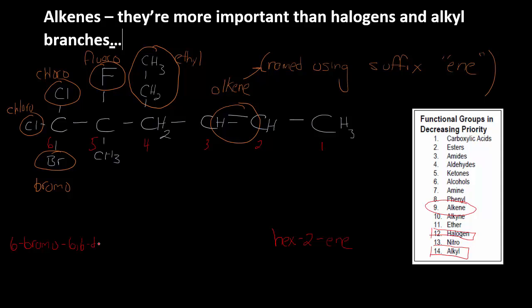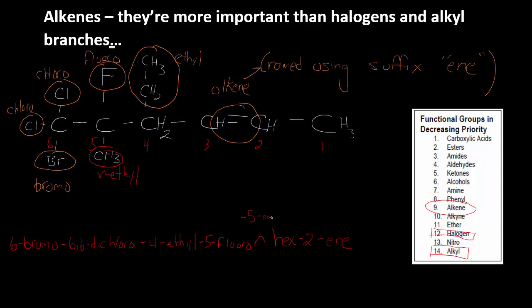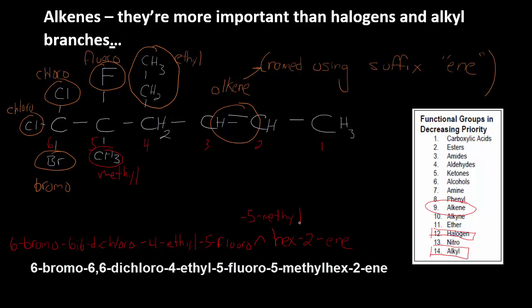Label all your branches: 6-bromo, 6,6-dichloro. And there's the methyl group I forgot about. Then we have 4-ethyl, 5-fluoro, and 5-methyl — to get the alphabetical order right. So the full name is 6-bromo-6,6-dichloro-4-ethyl-5-fluoro-5-methyl-hex-2-ene.